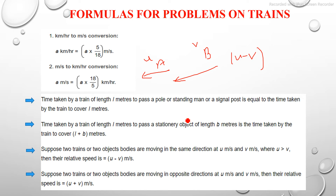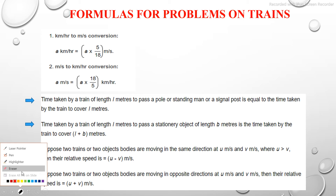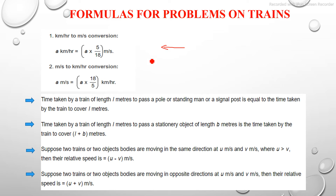If two trains or two objects are moving in opposite directions - suppose train A is moving in one direction and train B is moving in the opposite direction, A with u meters per second and B with v meters per second - then the relative speed will be u plus v meters per second.